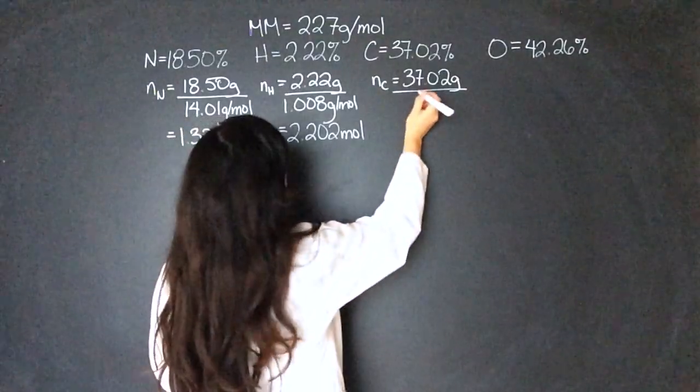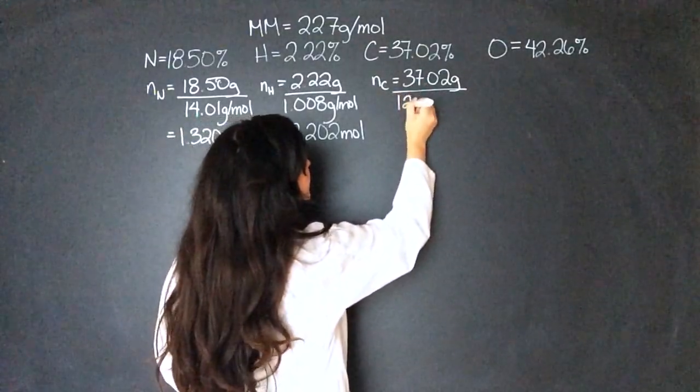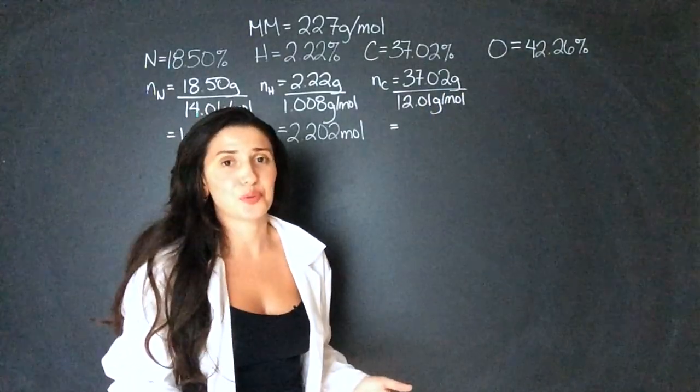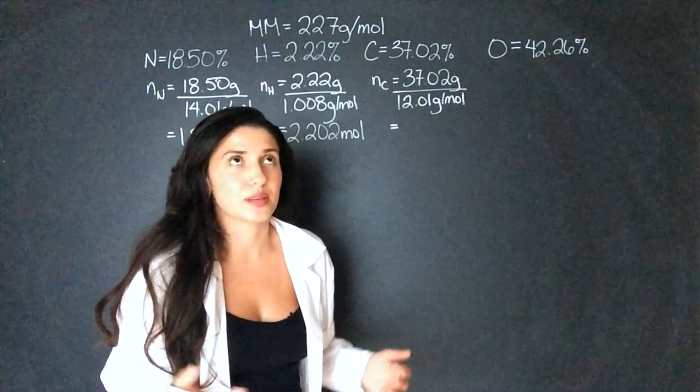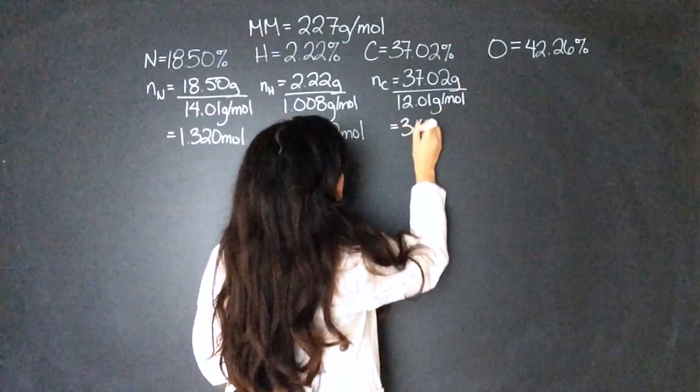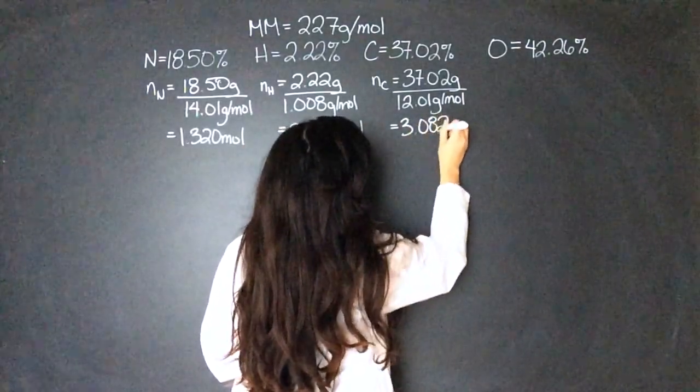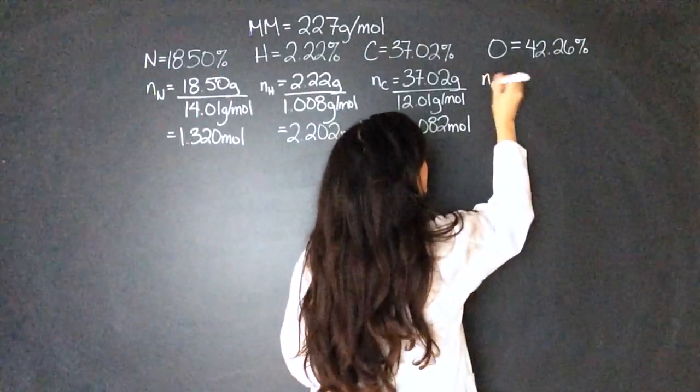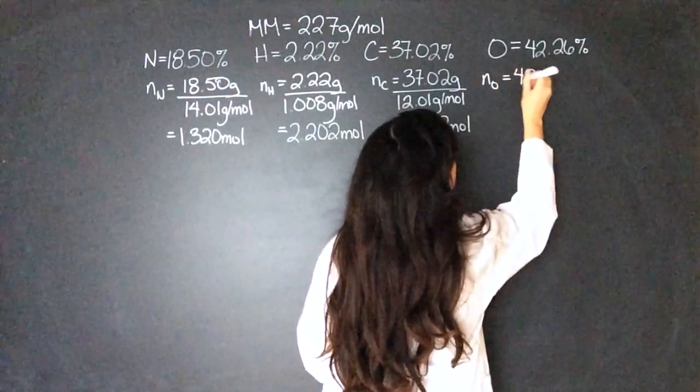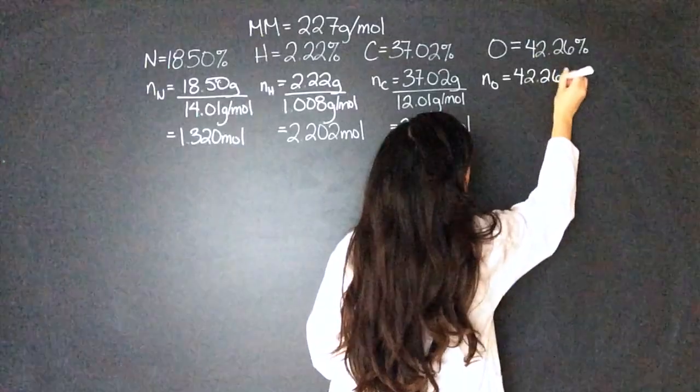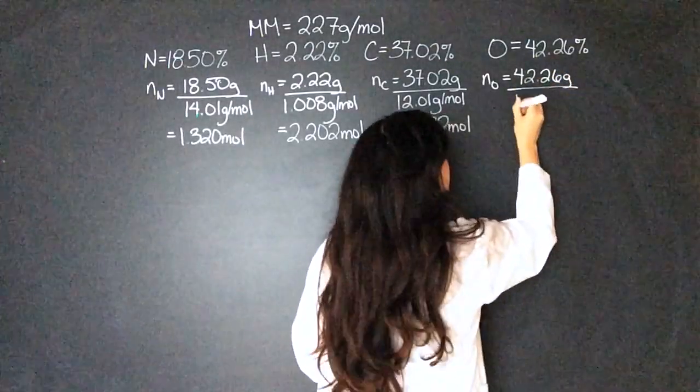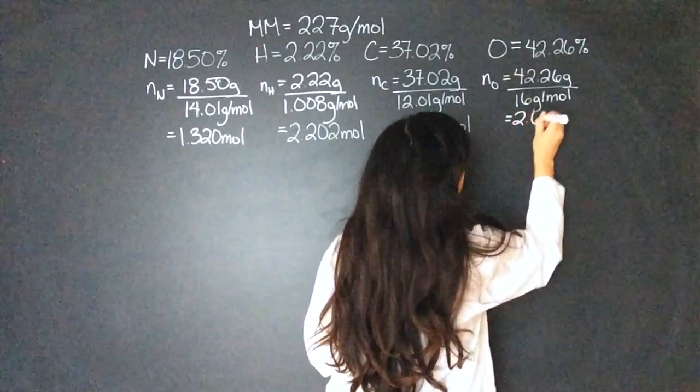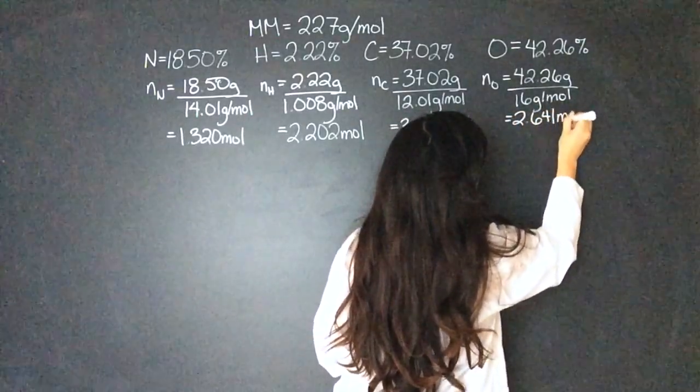I literally have those molar masses memorized because we use them so often. 3.082 mole. And then the moles of oxygen equals 42.26 grams over 16 grams per mole. That equals 2.641 mole.